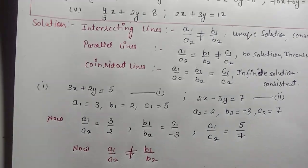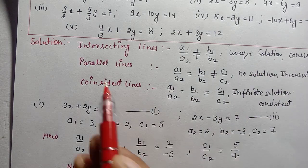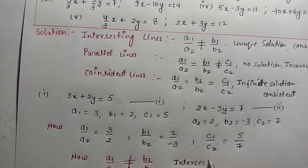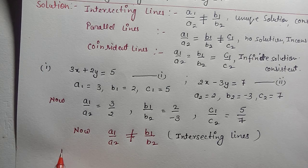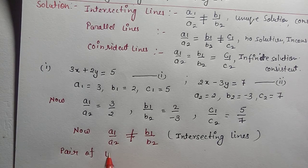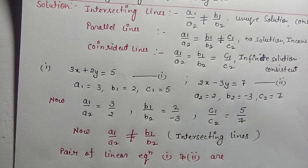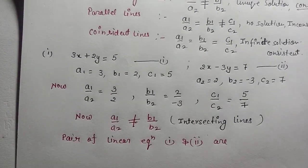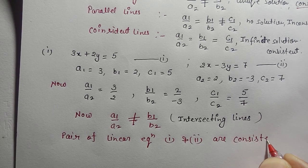Since A1/A2 is not equal to B1/B2, this satisfies the first condition — that is, intersecting lines with a unique solution. So the pair of linear equations 1 and 2 are consistent. This is consistent.